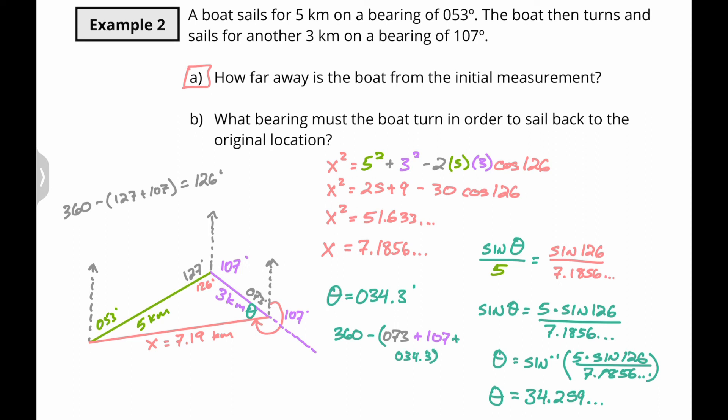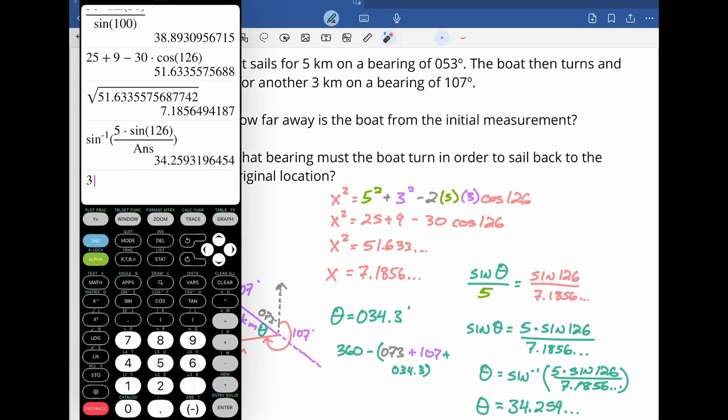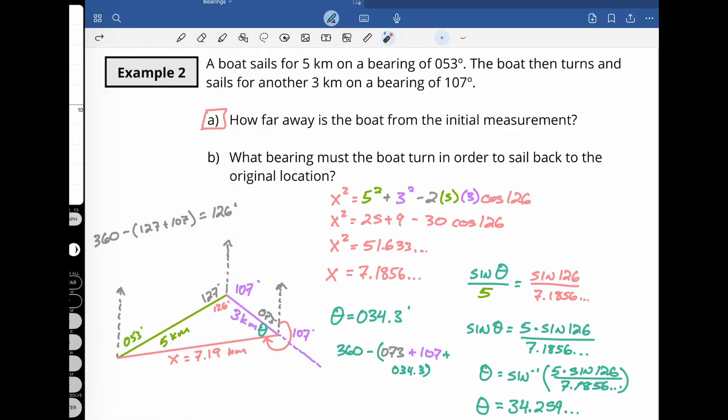Alright, so calculator, let's do your stuff. 360 minus parentheses 73 plus 107 plus 34.3. And that's going to be 145.7.